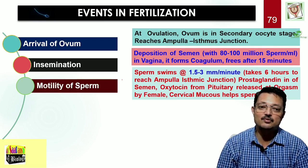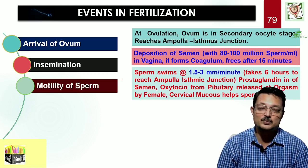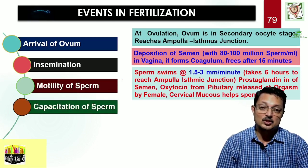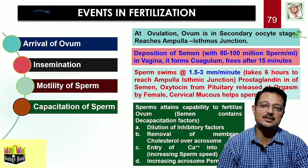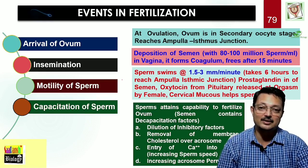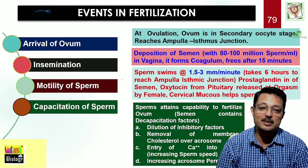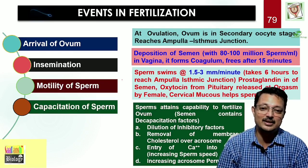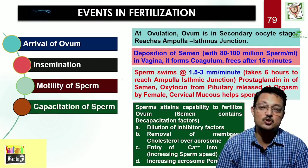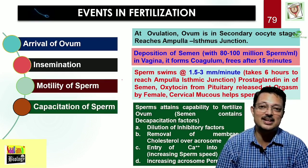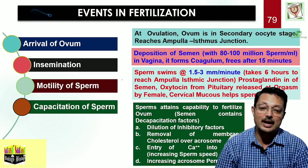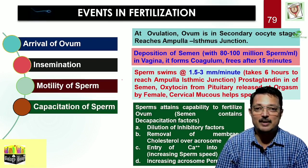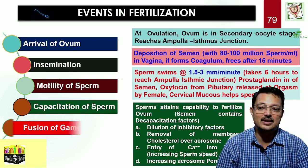Prostaglandins in the semen, oxytocin released from the pituitary during orgasm, and cervical mucus in the female reproductive tract all help in the gliding of the sperm. The sperm at this point is not yet capacitated and has to be capacitated — meaning made capable of fertilizing the egg. There is an inhibitory factor that gets diluted in the female reproductive tract. The cholesterol membrane over the acrosome is removed, calcium enters the sperm, increasing motility and acrosomal permeability, ensuring the sperm is ready to fertilize.